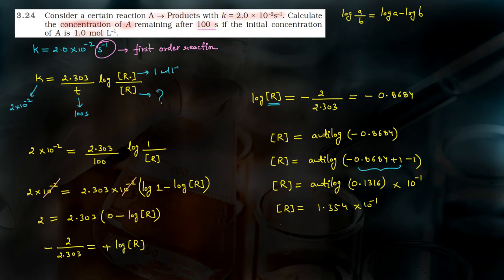So the concentration of R equals 0.1354 mole per liter. This is the answer to this question. See you with the next question. Bye-bye.